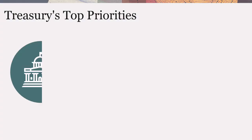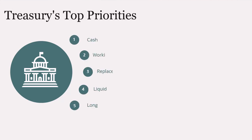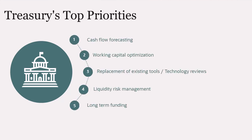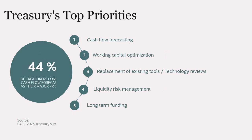Corporate Treasury focuses on many key priorities, including working capital optimization and liquidity risk management. Based on the Treasury survey, 44% of them state cash forecasting as their top priority.